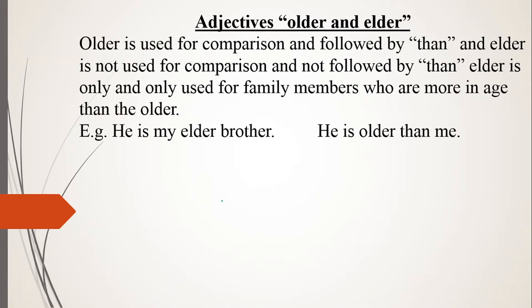We are going to differentiate both. Older is the comparative degree of the adjective 'old' and is used when we compare; it is followed by 'than'. Elder, on the other hand, is not used for comparison and is not followed by 'than'. Keep this in mind.